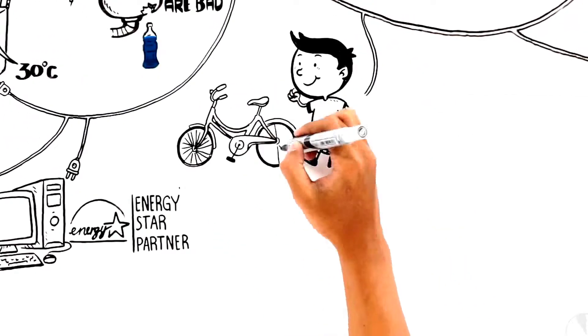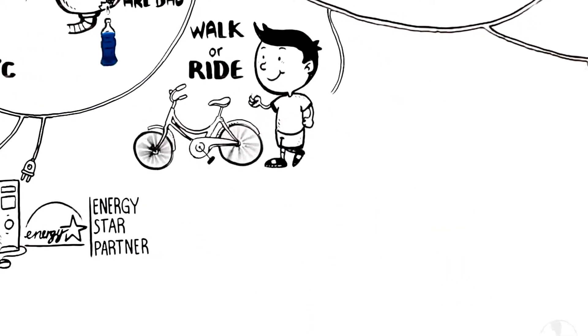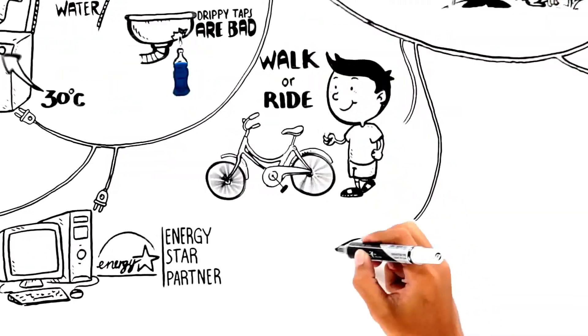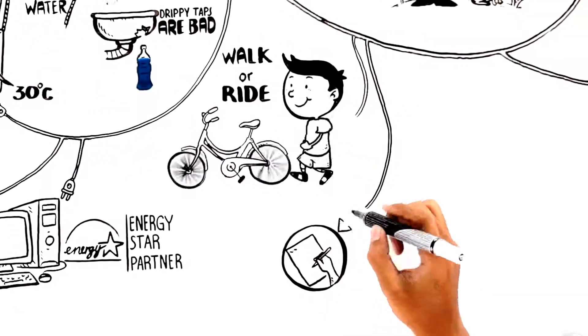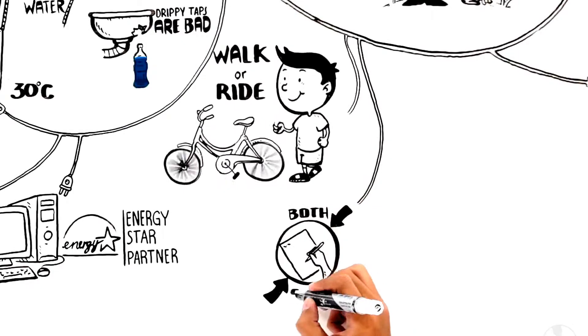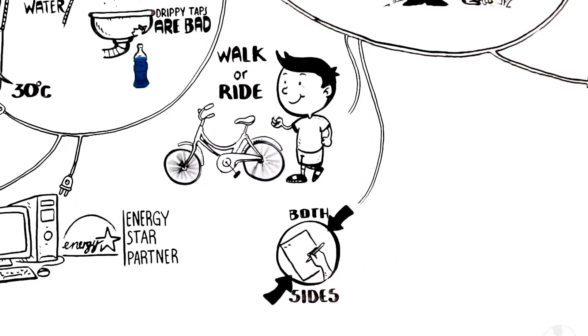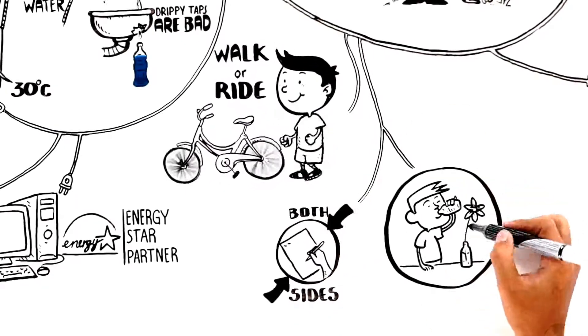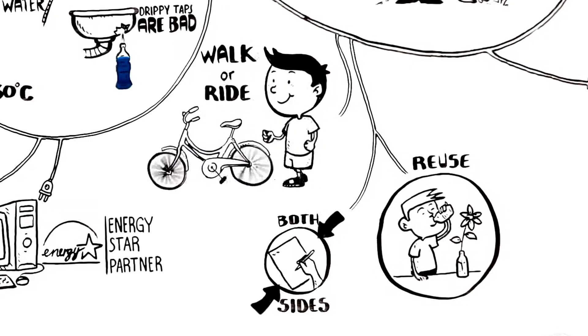And how about riding a bike instead of driving? Being energy smart means doing little things. Little things that are important, like using both sides of a piece of paper. And if you can reuse something instead of throwing it away, please do.